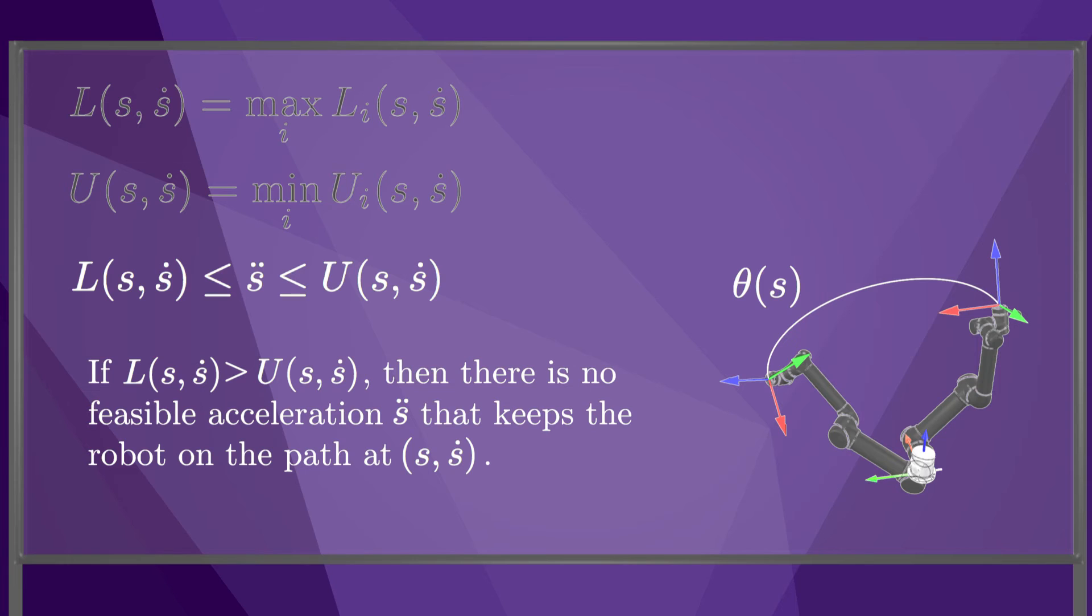In other words, if the robot found itself at such a state, it would immediately have to leave the path. The actuators are not strong enough to keep the robot on the path. This typically happens when the robot is moving at high speed.